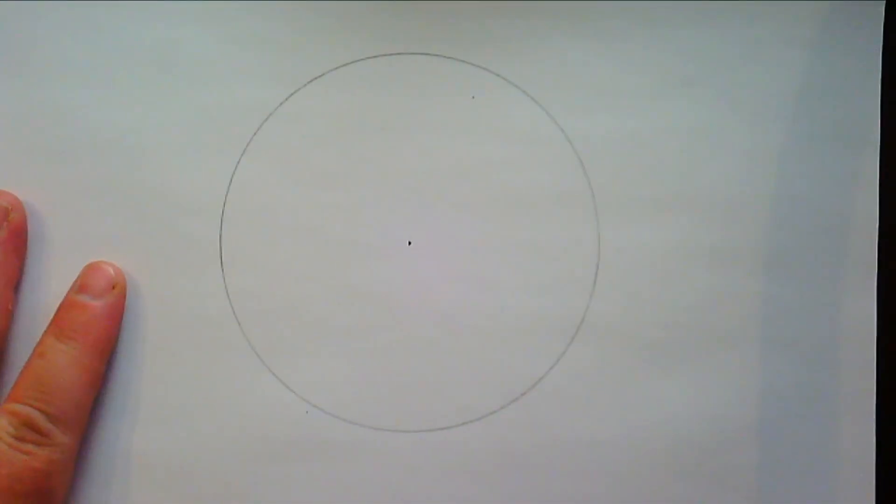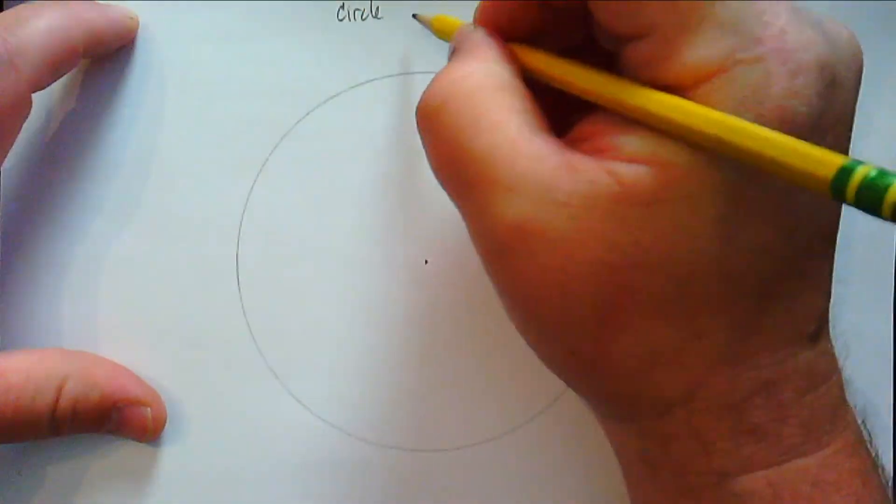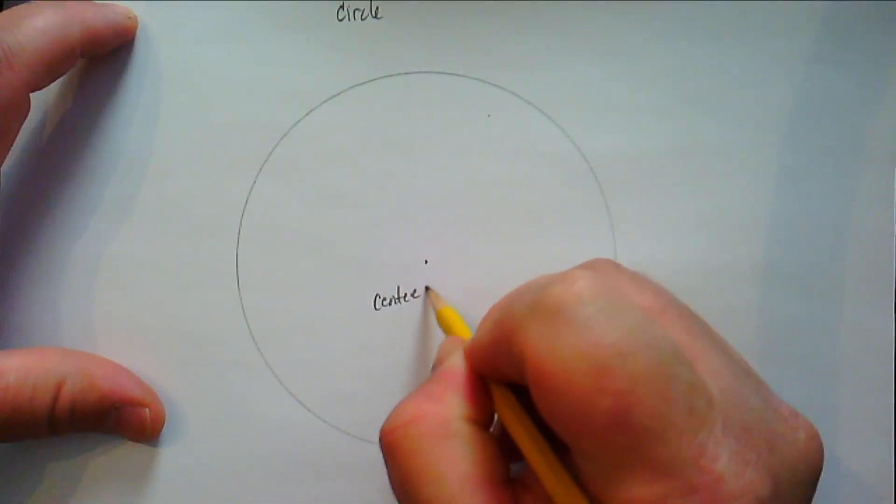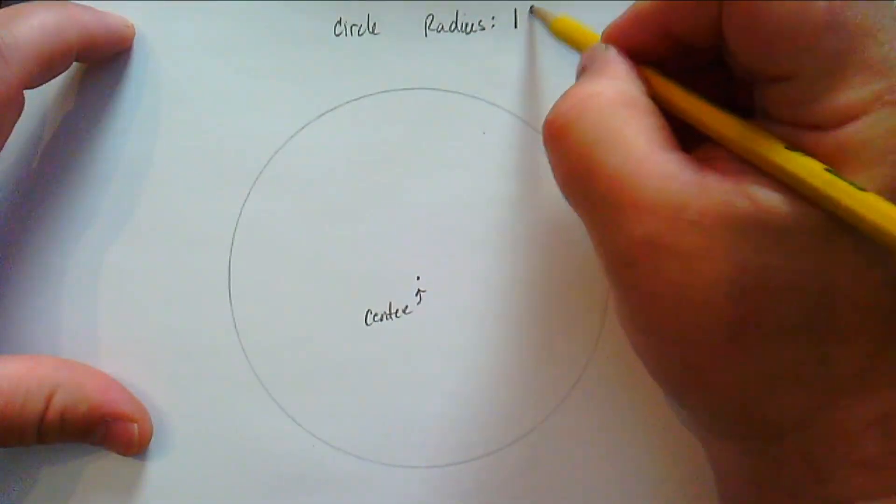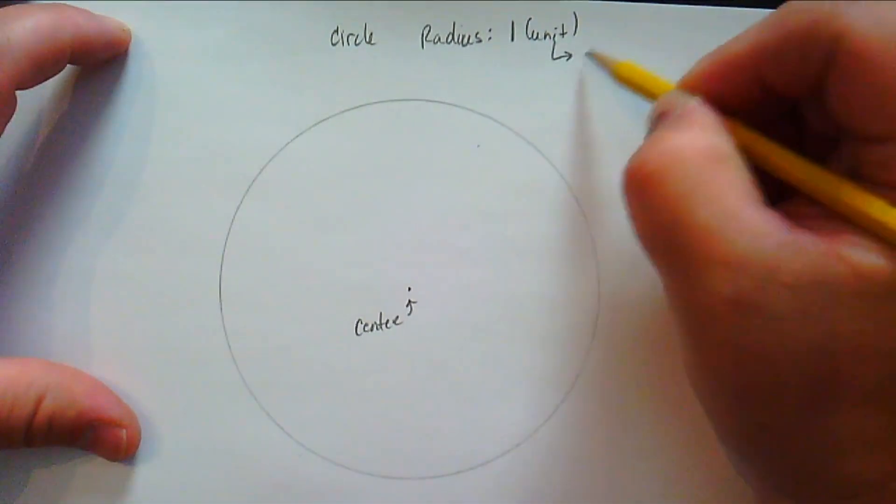Let's start off with, well, unit circle. So I've got my fancy compass here. Let's go ahead and make a circle. Well, man, it's easier to turn the paper than it is to turn the compass. So there's the center of the circle, right? This circle, it's called the unit circle because the radius is just one whatever.